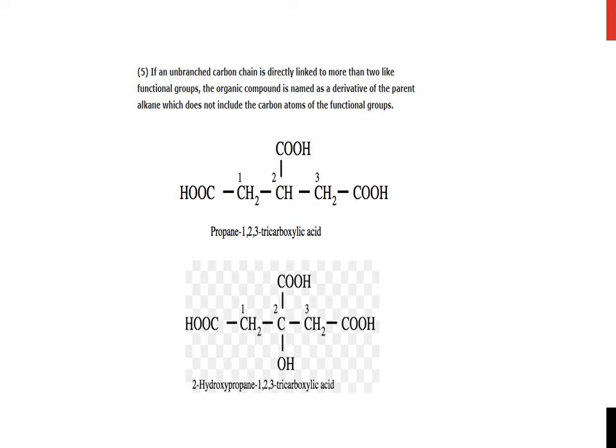Next, if an unbranched carbon chain is directly linked to more than two like functional groups, the organic compound is named as a derivative of the parent alkane, which does not include the carbon atoms of the functional groups. Here, in this example, you are provided with a chain of three carbon atoms, very simple propane. But here you are also provided with three functional groups, all the same, and they are carboxylic. Then how to name it? Now you can decide only one side, either left or right to start. Suppose left side is selected, then it is propane-1,2,3-tricarboxylic acid.